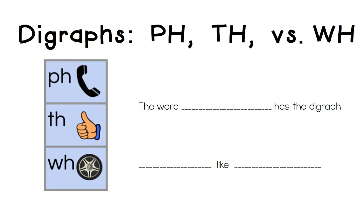The three digraphs that we're focusing on this week are the digraphs PH, which makes a sound like phone, TH, which makes a sound like thumb, WH, which makes a sound like wheel.